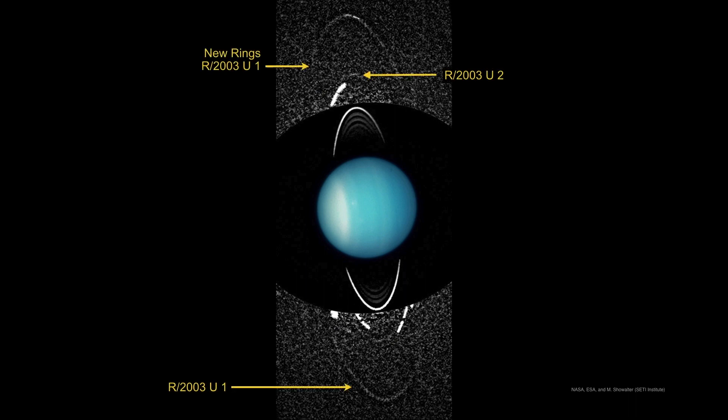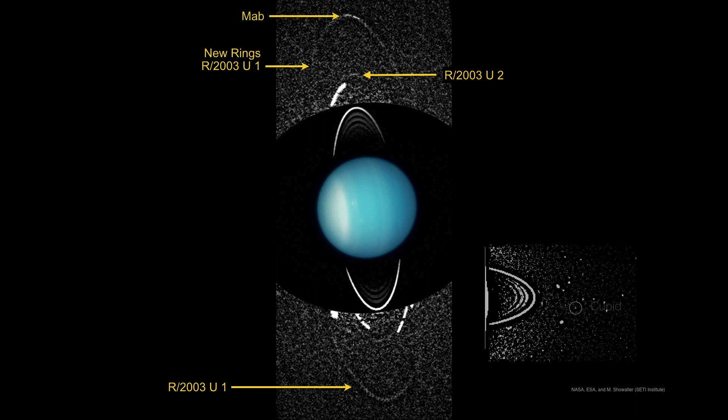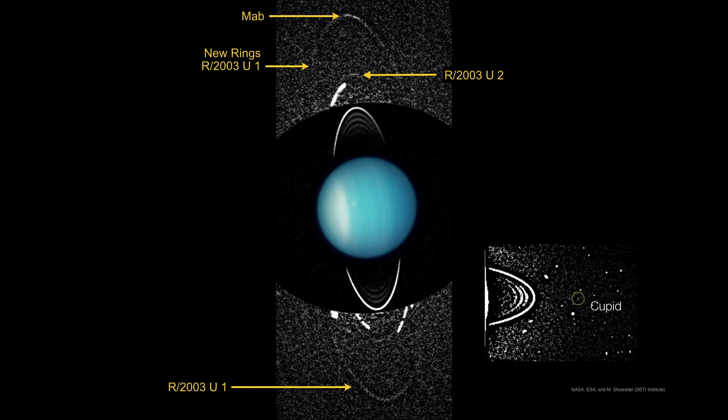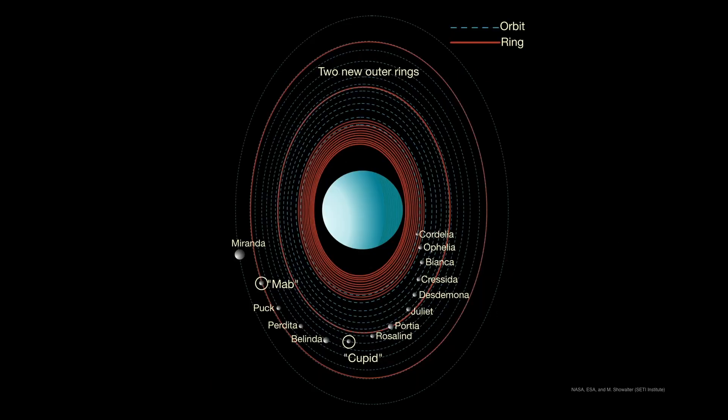And although it's not obvious from this particular image, the astronomers detected a second inner ring as well. Not only that, but two new moons, Mab, was discovered in this image and Cupid was discovered in a follow-up series of images. This is our present understanding of Uranus with 13 rings and 14 moons.